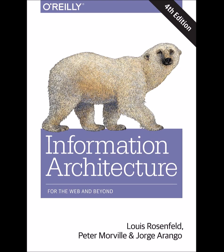Recap of Chapter 10. Thesauri, controlled vocabularies, and metadata operate on the back end of an information environment to enable a more seamless and satisfying experience on the front end. Metadata tags are used to describe documents, pages, images, software, video and audio files, and other content objects for improved navigation and retrieval. Controlled vocabularies are subsets of natural language, and include synonym rings, authority files, classification schemes, and thesauri. Faceted classification and polyhierarchy allow you to make information available in more than one way. With this, we conclude the basic principles part of the book.